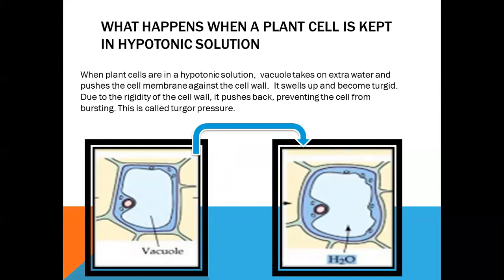Because of the rigid cell wall, this is not going to burst. Such a cell which is full of water is called a turgid cell, and this condition is very good for a plant because this helps in plant growth and helps in expansion of the leaf.